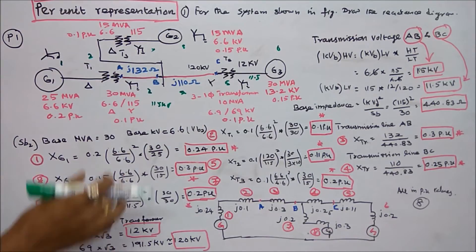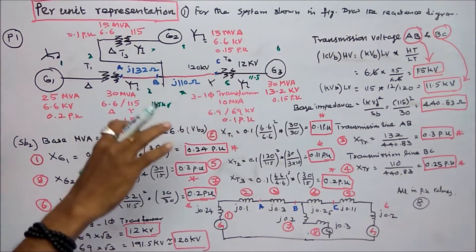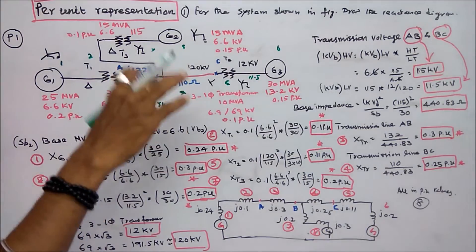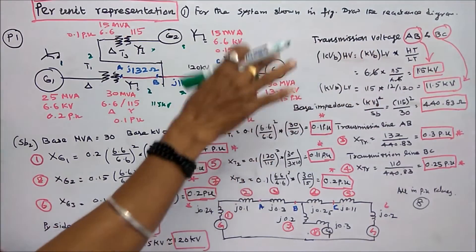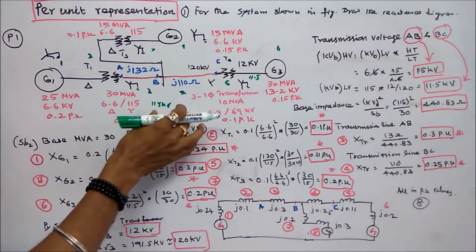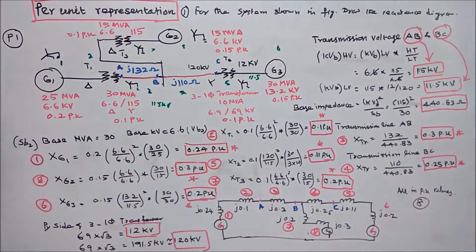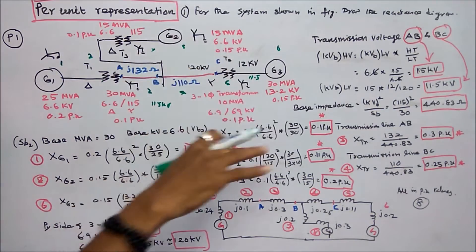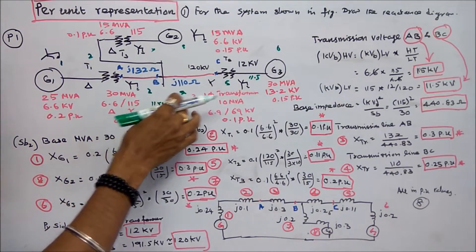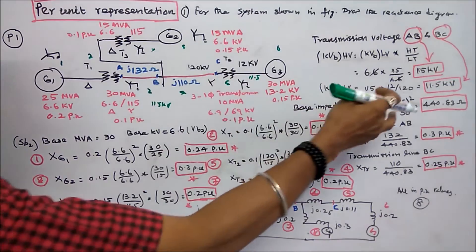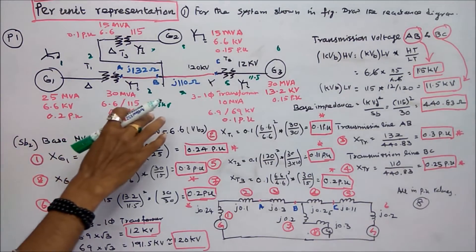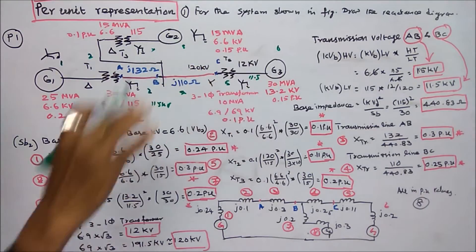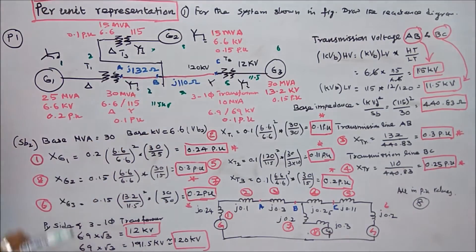For the transmission line, I have to find the high voltage kV base. High voltage kV base = low voltage kV base × (HT/LT) = 6.6 × (115/6.6) = 115 kV. So from A to C the value is 115 kV. On the low voltage side: low voltage kV base = 115 × (12/120) = 11.5 kV. So the three voltage bases are 6.6, 115, and 11.5 kV.